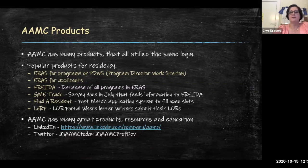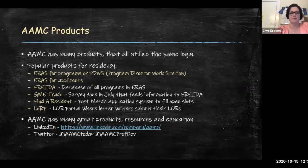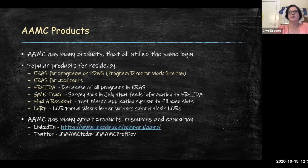There is a system called Find a Resident that is a very little-known but actually useful system, especially for programs that have unfilled slots after match — whether main match or fellowship match — and you're worried about how to fill them. It's a lesser-known resource that's completely free to both programs and applicants, and I think more programs should use it.